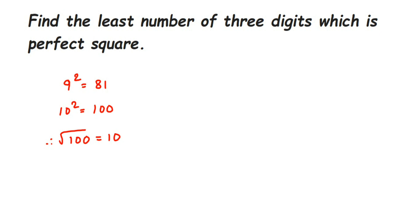So from here we can conclude that, therefore, 100 is a smallest or the least, we can say least three-digit number which is perfect square. This was a simple question. This can be asked for one mark.